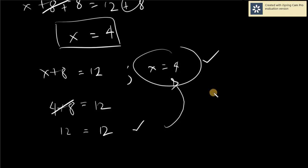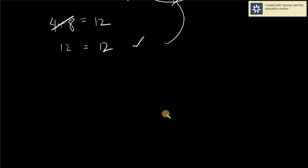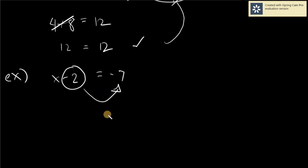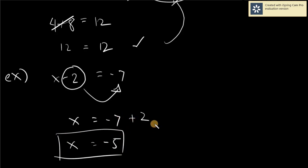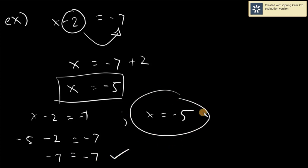Later on, we will be discussing a combination of this method called transposition. For our final example, x minus 2 equals negative 7. Transposition means transferring the term to the other side and reversing the operation. So x equals negative 7 plus 2. The answer is negative 5. Checking: negative 5 minus 2 equals negative 7. Negative 5 minus 2 is indeed negative 7 — correct. Therefore x equals negative 5 is our solution.